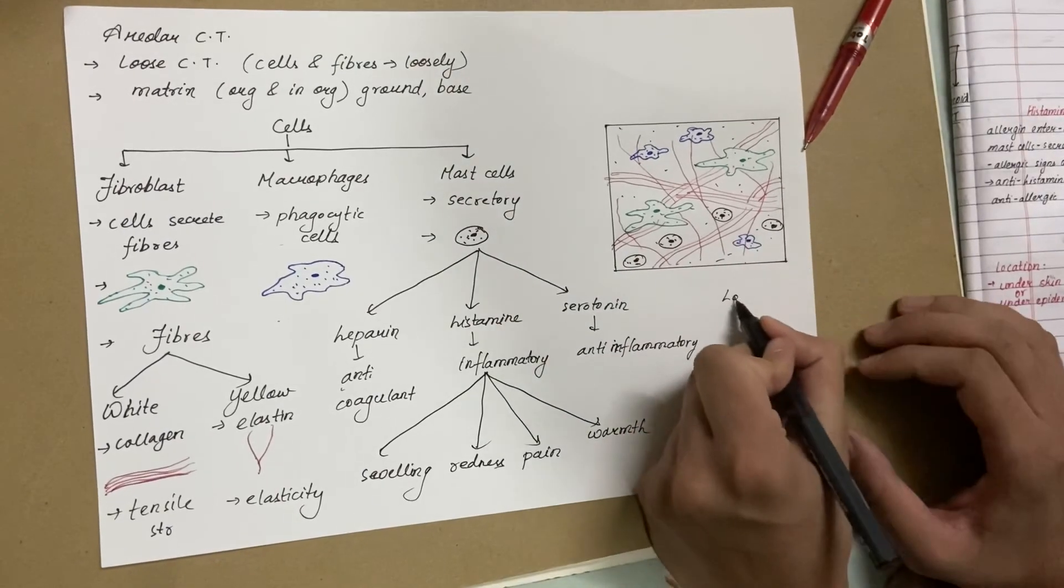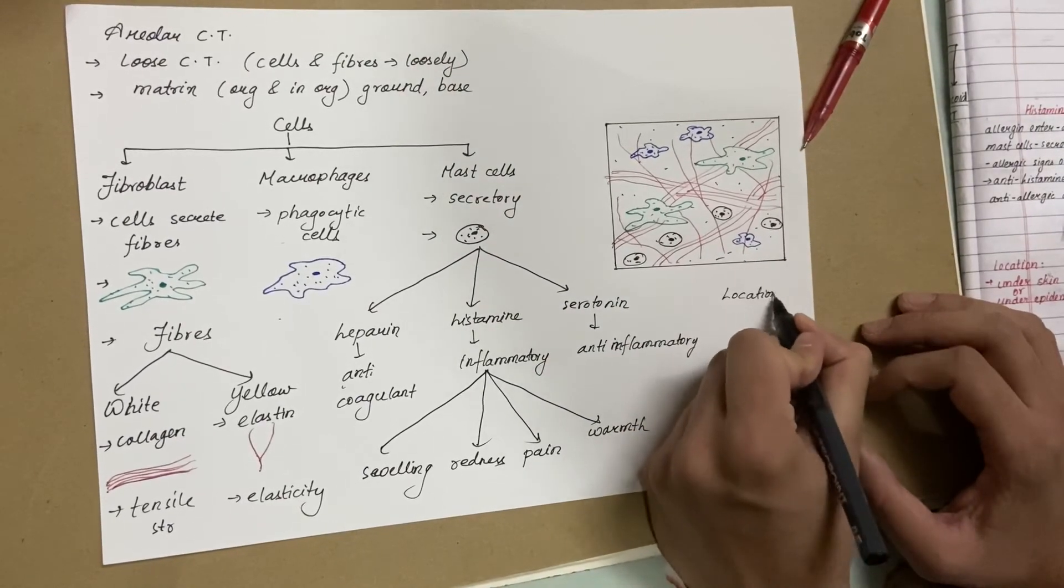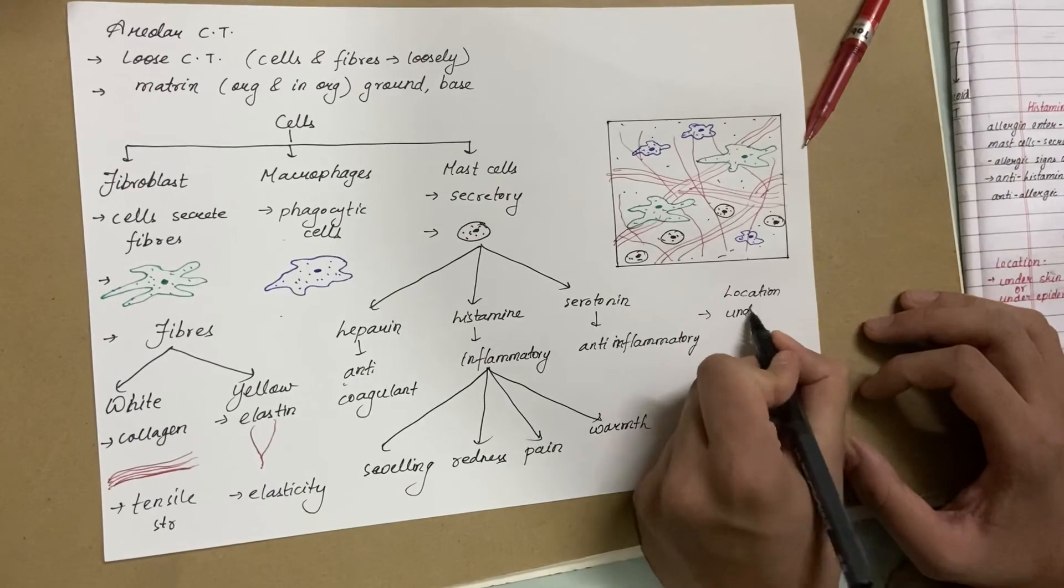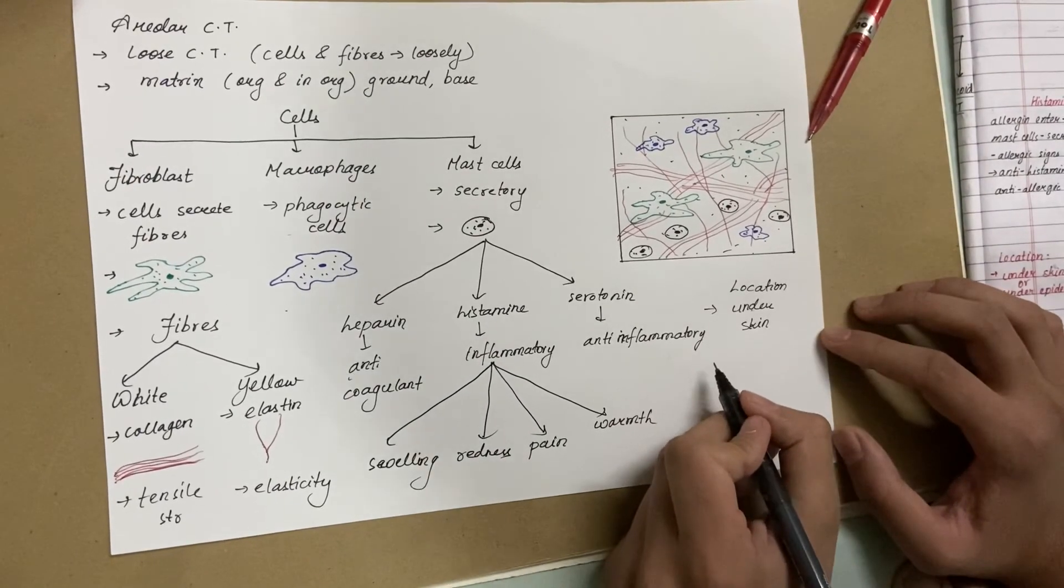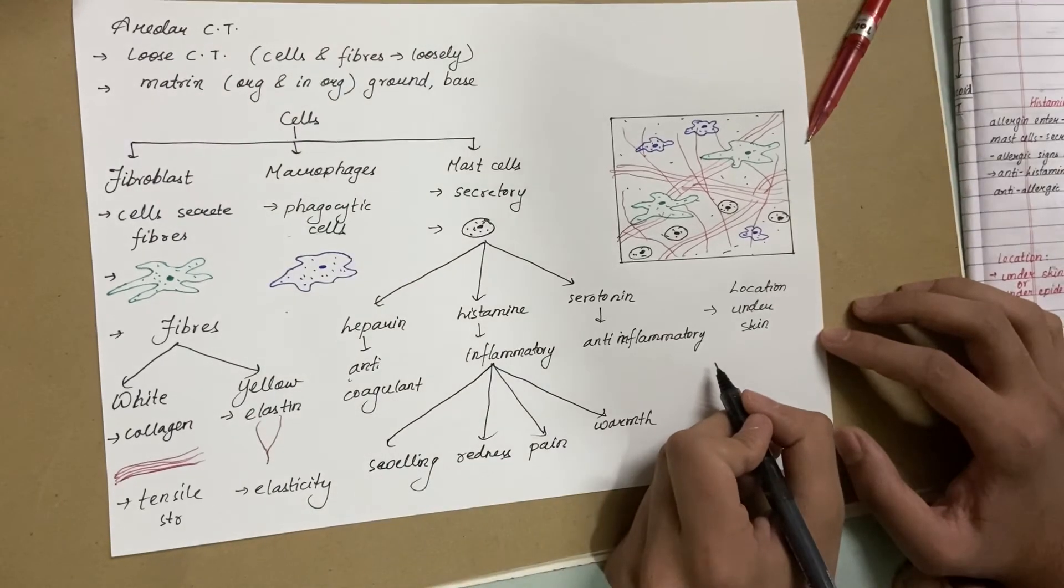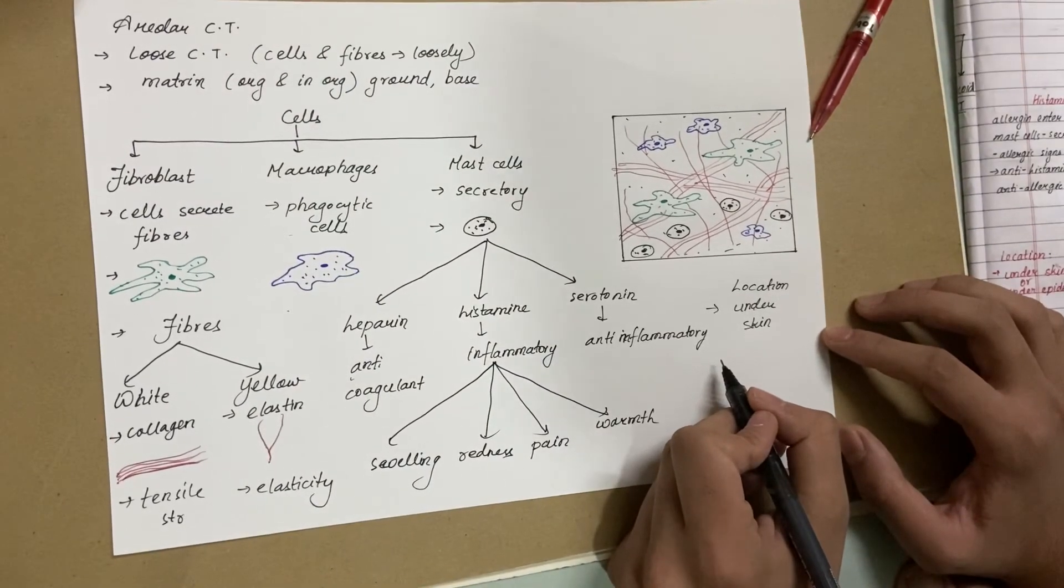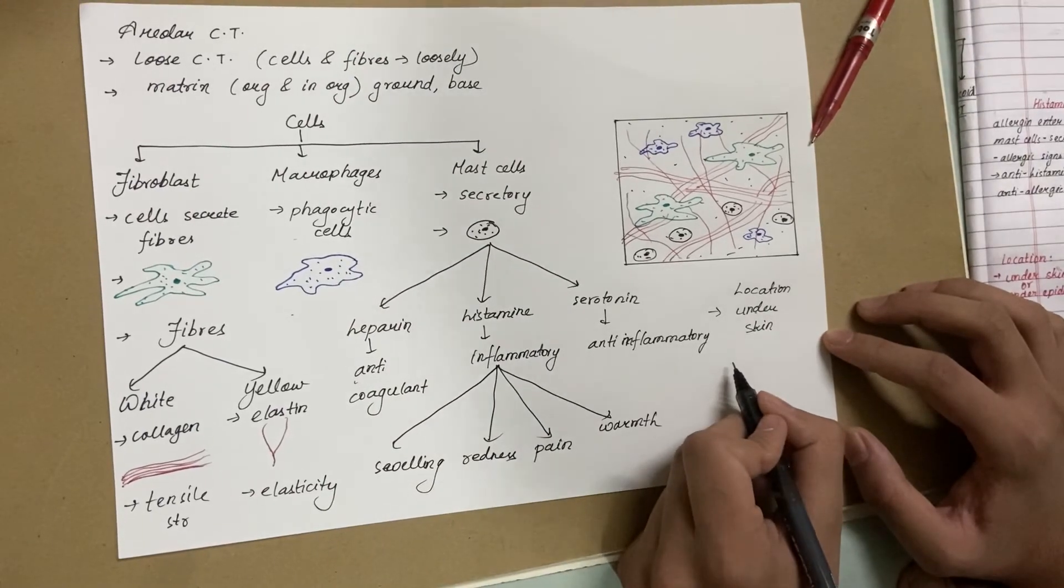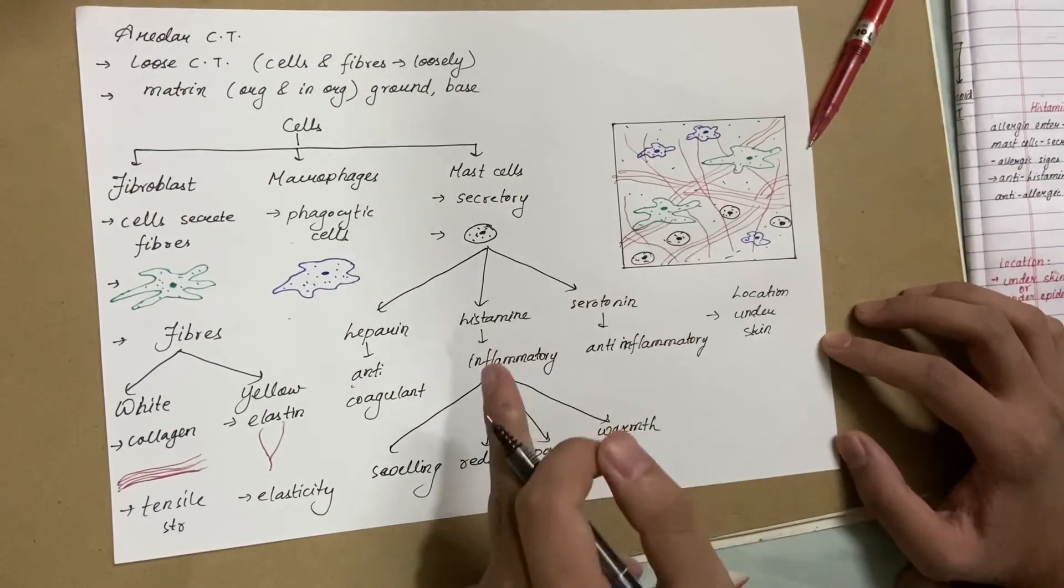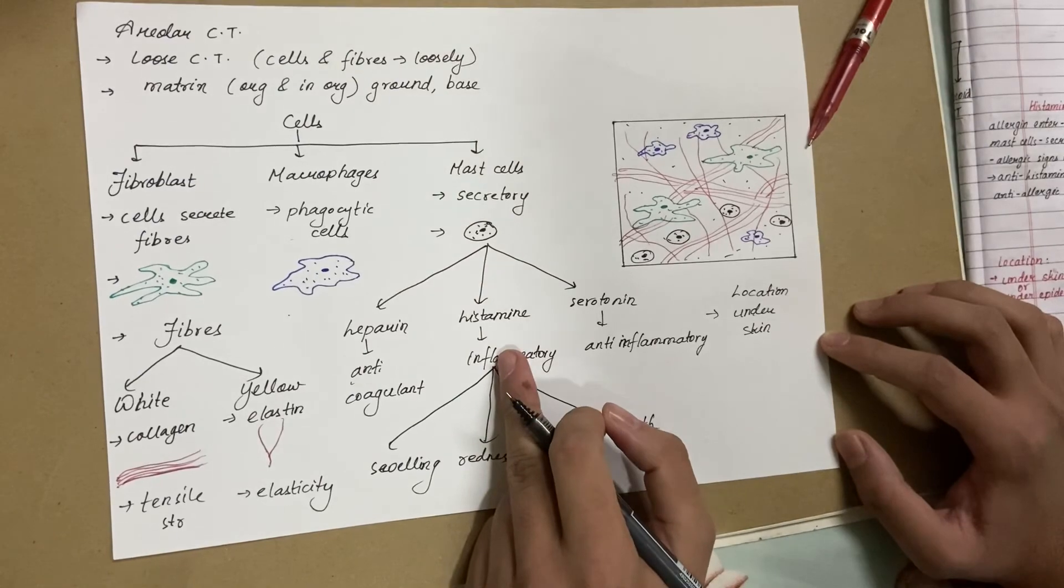As for their location, they are always found underneath your skin. That is why no matter where a mosquito bites on your skin, there is always inflammation because there is always areolar tissue right beneath your skin which contains mast cells, and mast cells secrete histamine whenever a mosquito bites.